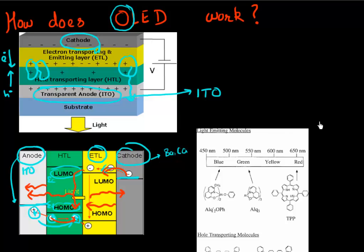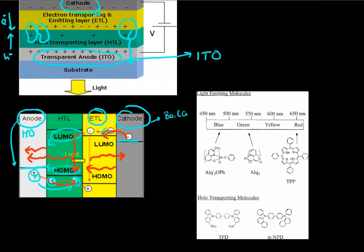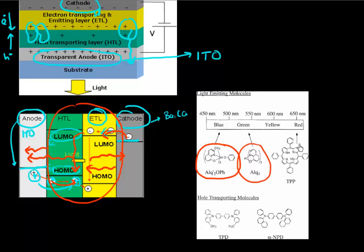The way you generate different colors is again very simple. You use different molecules for making these layers. Shown here are some of these different molecules. They look like a lot of organic and benzene rings, but essentially what they do is they have different energy difference between their HOMO and LUMO layers. That gives you different energy of the light coming out.